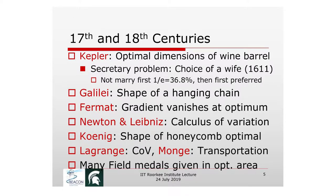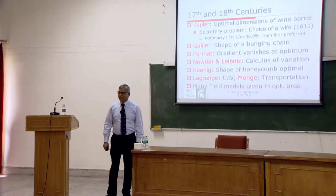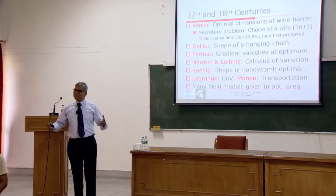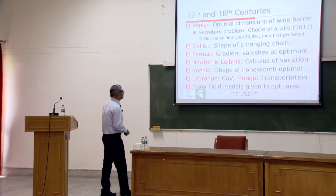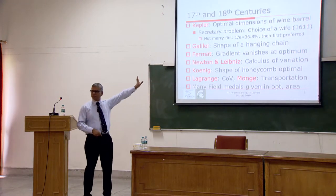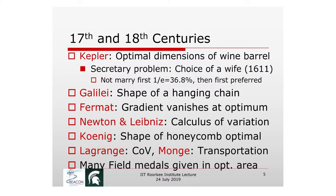Kepler did something very interesting: he was trying to figure out what size and shape a wine barrel should be to last the longest. He also worked on something largely known as the 'secretary problem.' Back in 1611, he suggested an algorithm for choosing a wife — interview some candidates but don't accept the first 1/e (about 36.8%) of them; after that threshold, accept the first one you like. A lot of people still use this idea, not for choosing a spouse but as a framework for optimal stopping and sequential decision making.